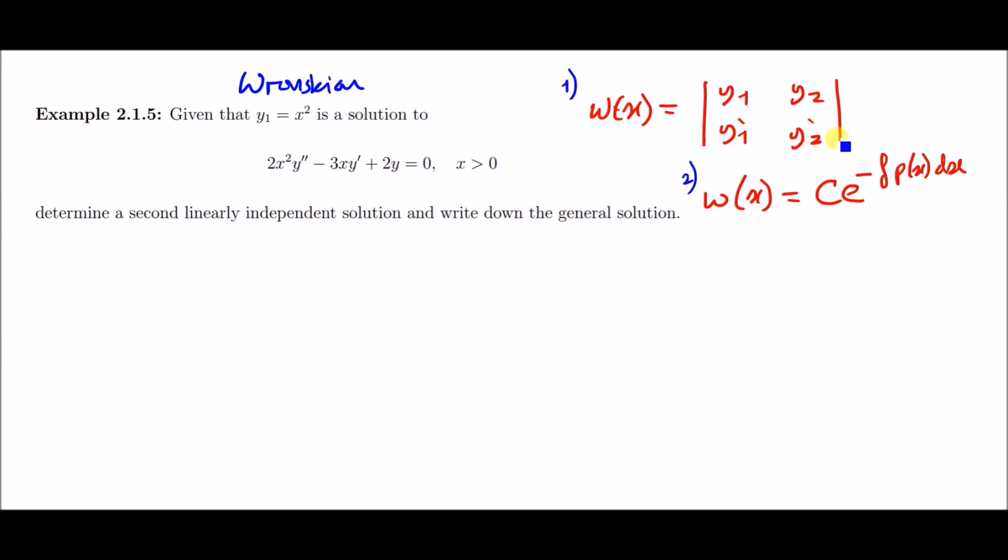The other definition of Wronskian is simply an integral where p(x) is the coefficient of y prime, so minus 3x over the coefficient of y double prime 2x squared. Let's put this one into practice and think about how to do this.